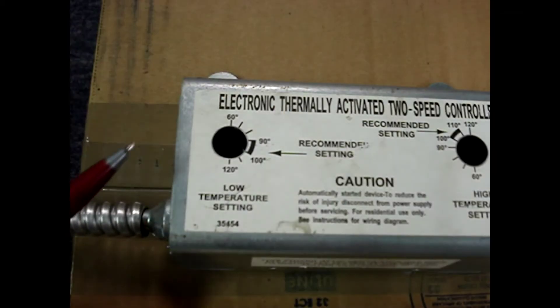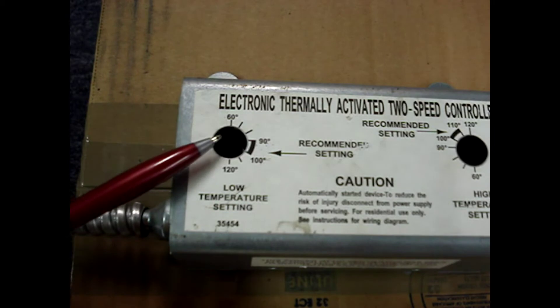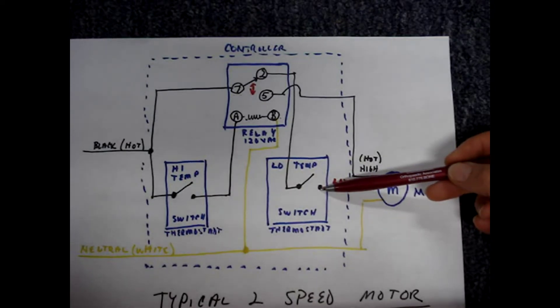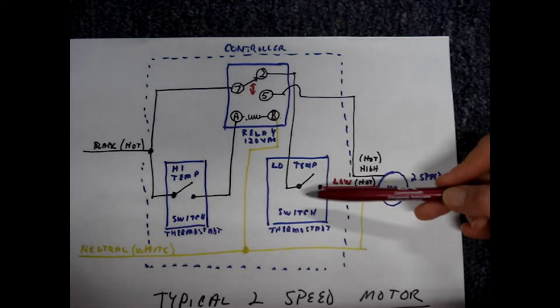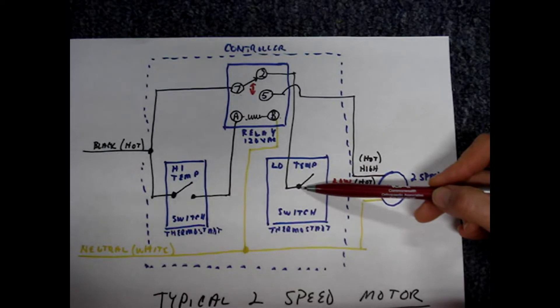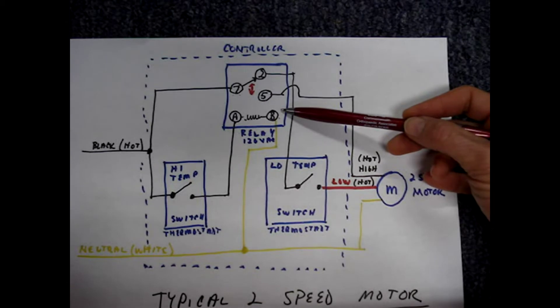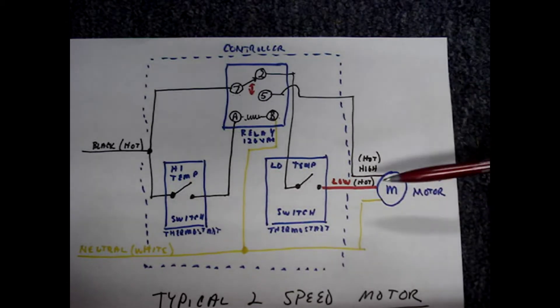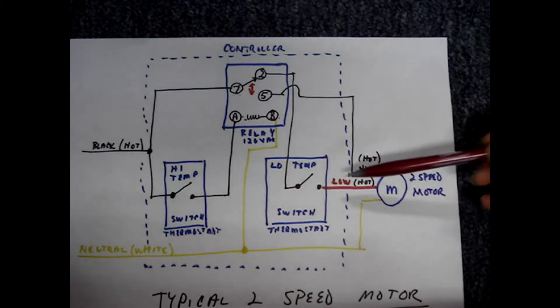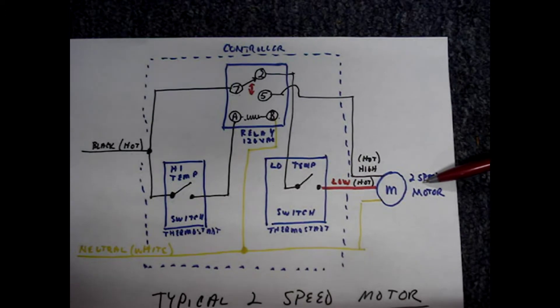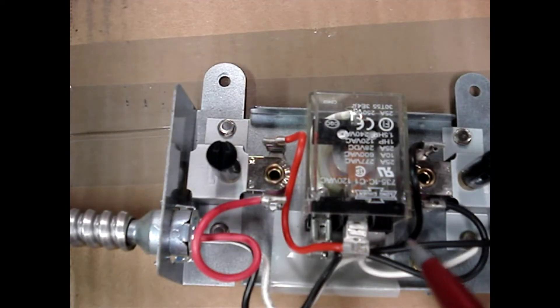When the attic temperature reaches the recommended low temperature setting of 90 to 100 degrees, the low temperature switch closes. And if you remember, the hot was sitting on one side of the low temperature switch when this 120 volt relay was not energized. The hot passes through the switch and onto the low speed winding of the two-speed fan motor.